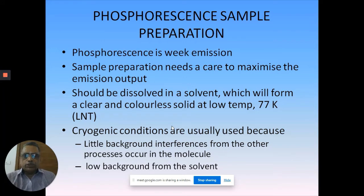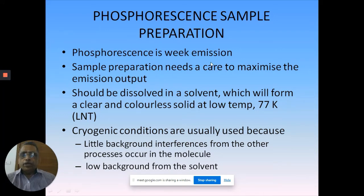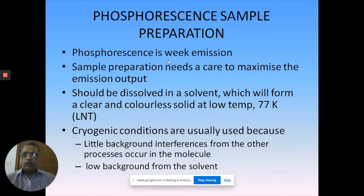Phosphorescence is much more demanding because you are handling the material at lower temperature. Most importantly, phosphorescence is a weaker emission compared to fluorescence - though not always. Some molecules like benzophenone have phosphorescence quantum efficiency of almost one. But generally, if you have fluorescence in your material, you may or may not have phosphorescence, and the quantum efficiency of phosphorescence will typically be lower than the fluorescence quantum efficiency.